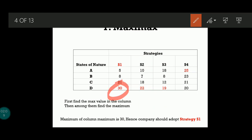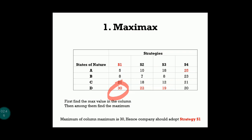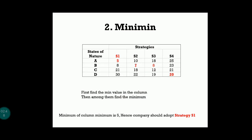Among these maximum values — 30, 22, 19, and 25 — which is the maximum? Since we are finding the maximax, the maximum among them is 30. So the maximum of column maximums is 30, and hence the company should adopt strategy S1.